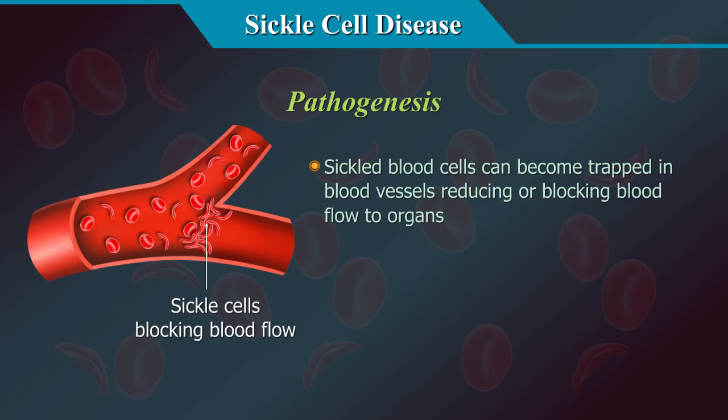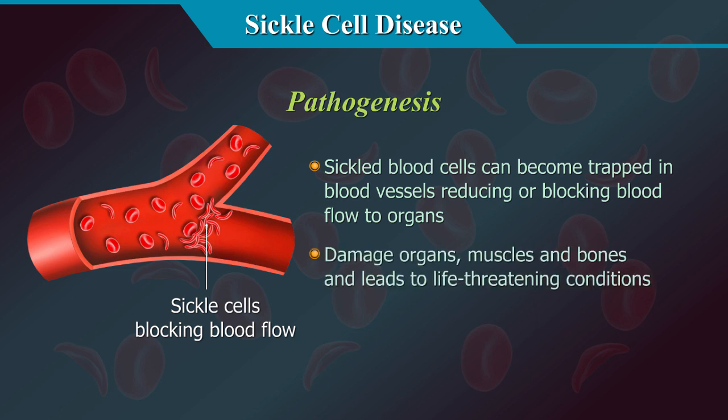Sickle blood cells can become trapped in blood vessels, reducing or blocking the blood flow. This can damage organs, muscles and bones, and may lead to life-threatening conditions.